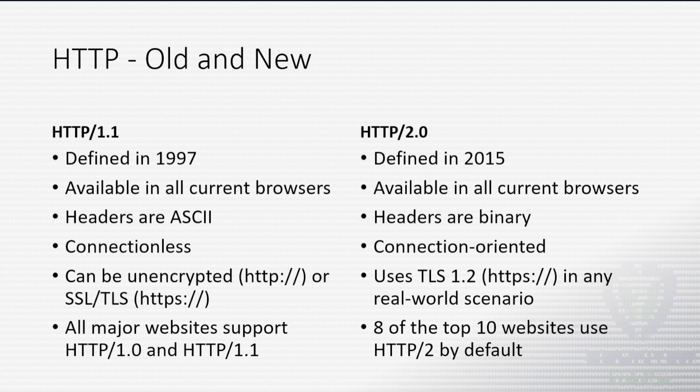With 1.1, we do still have some unencrypted, just regular HTTP websites, but of course most things we're doing anything sensitive on are going to be TLS — your social media, your email, or whatever. With 2.0, the RFC actually allows for an unencrypted HTTP 2 connection, but no browser will speak it. Really the only tool I've found that will speak unencrypted 2.0 is curl, and we'll play with that here in a little bit.